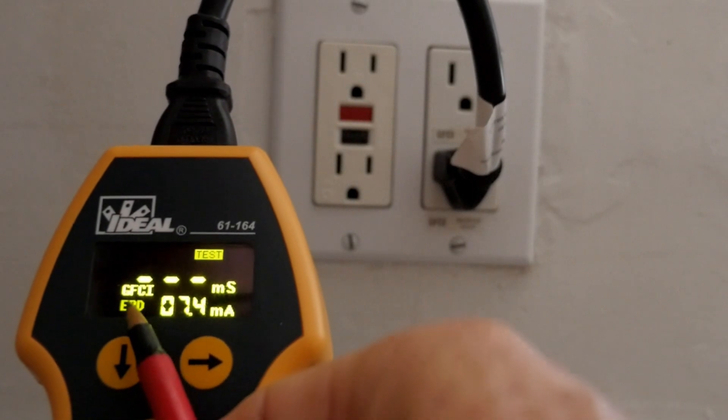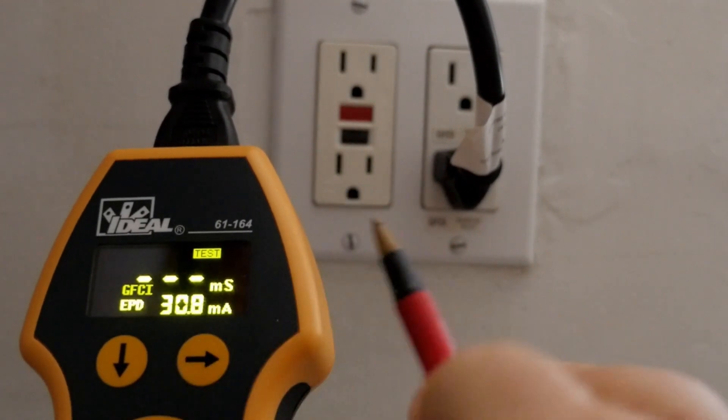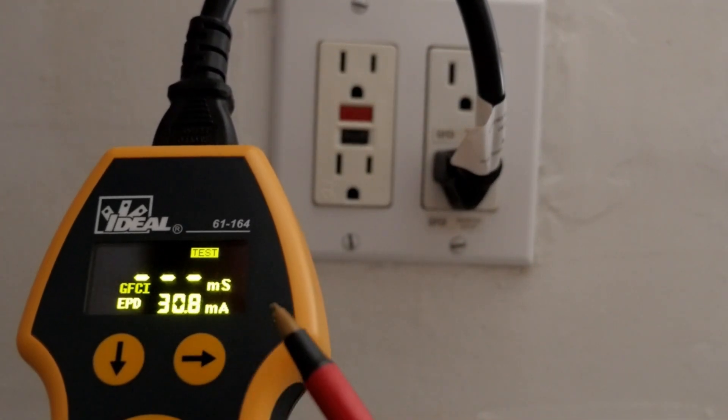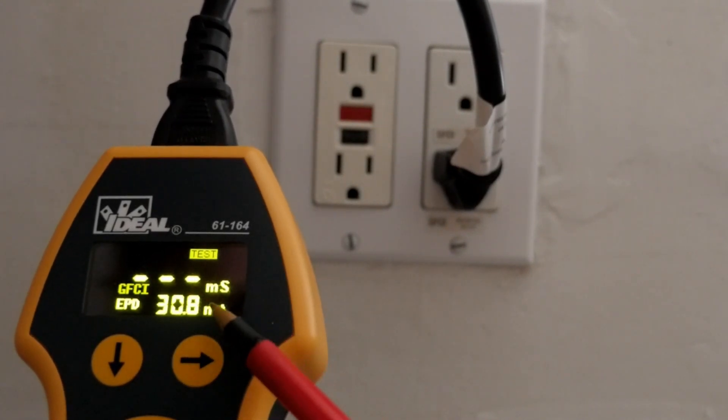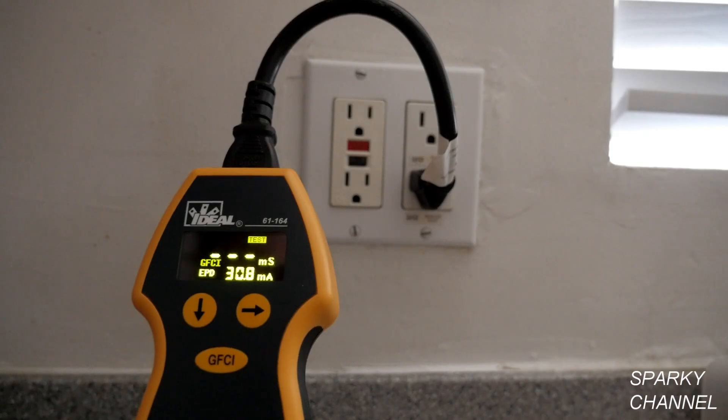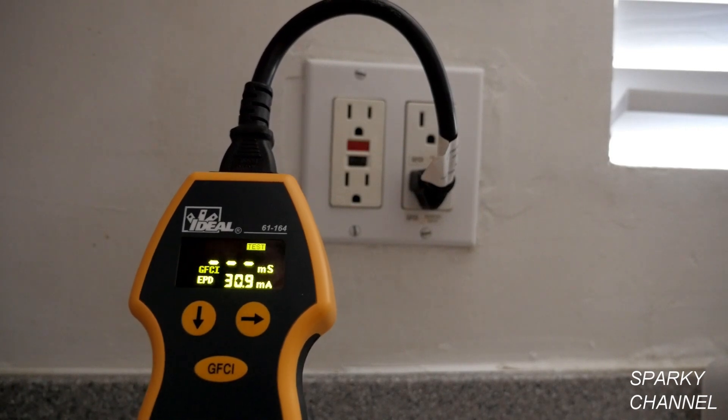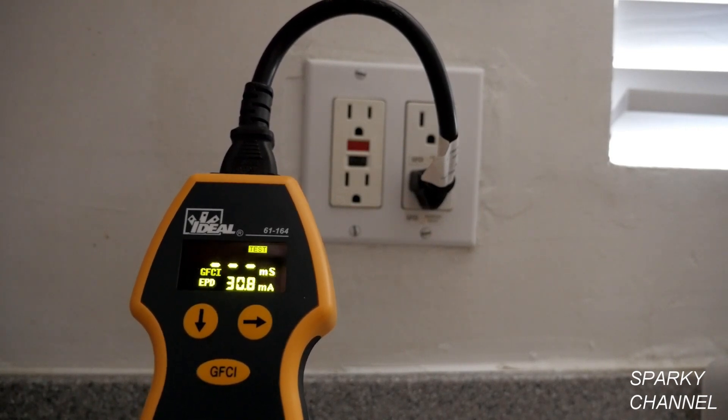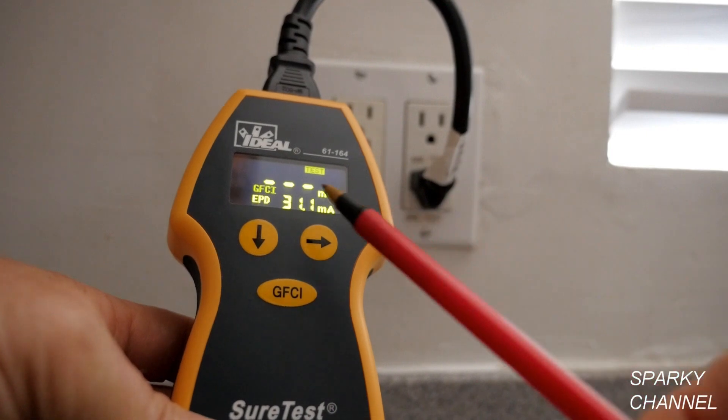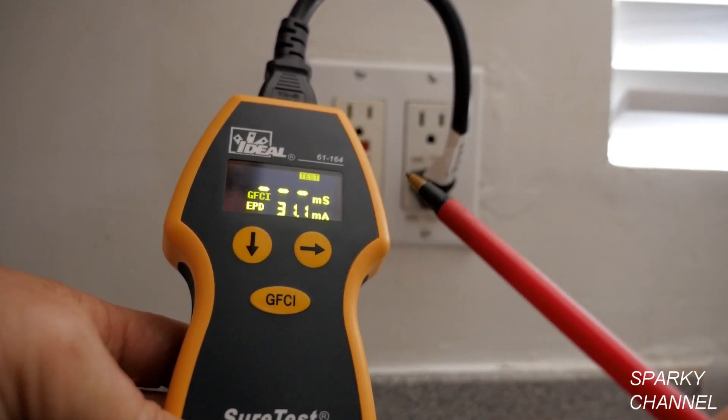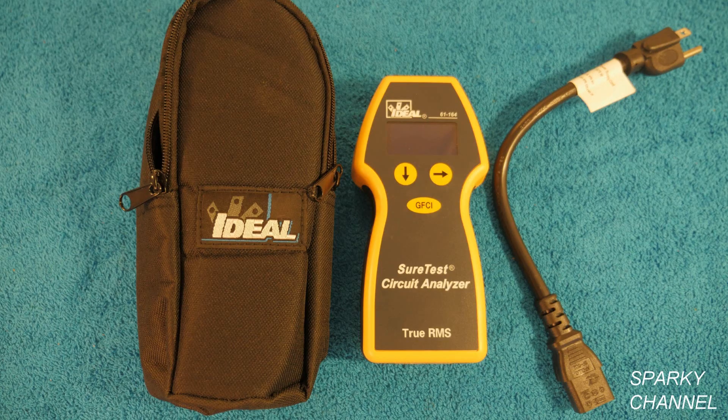This time we're going to go to EPD, which stands for Equipment Protective Device. Now we're on EPD, and the amount of milliamps that's going to be leaked between the hot and the neutral conductors is 30.8 milliamps. This is a test for Equipment Protective Devices. These are devices that are meant to protect equipment only. If I had an Equipment Protective Device that I would like to test at currently 31.1 milliamps, I would press the GFCI button and it would perform that test.